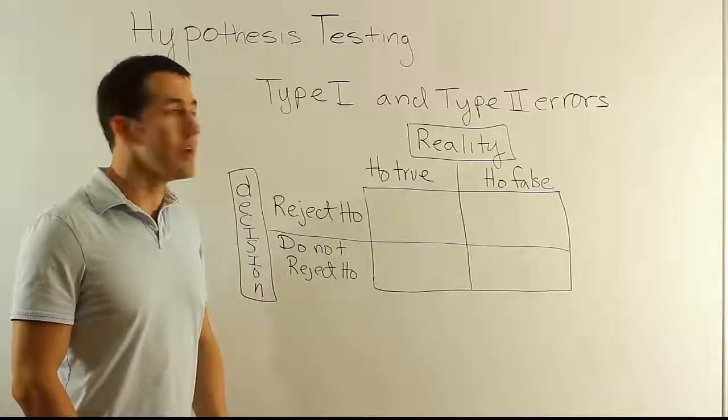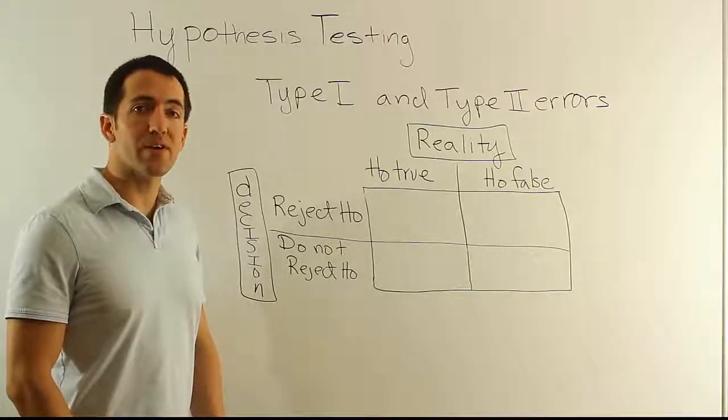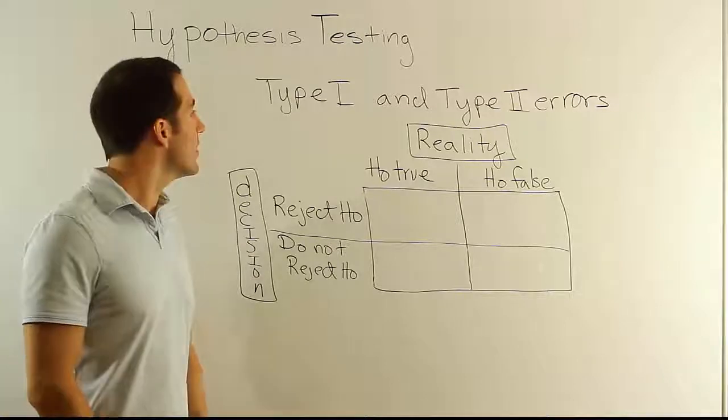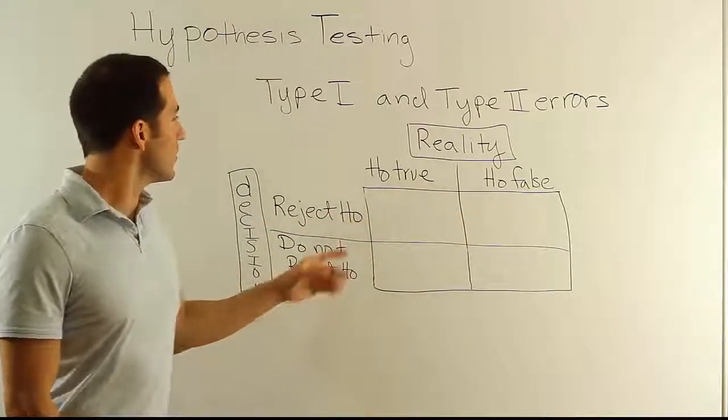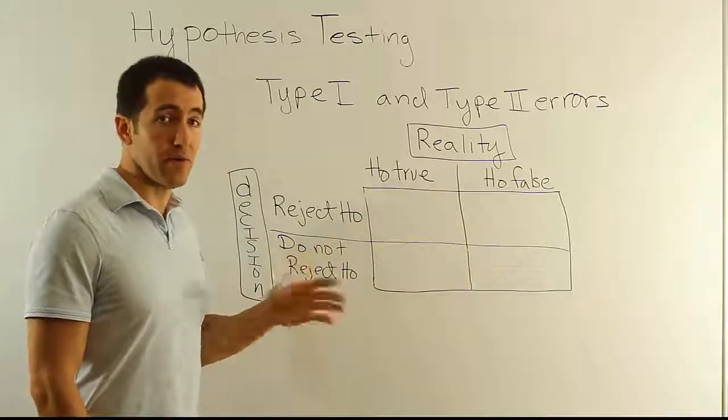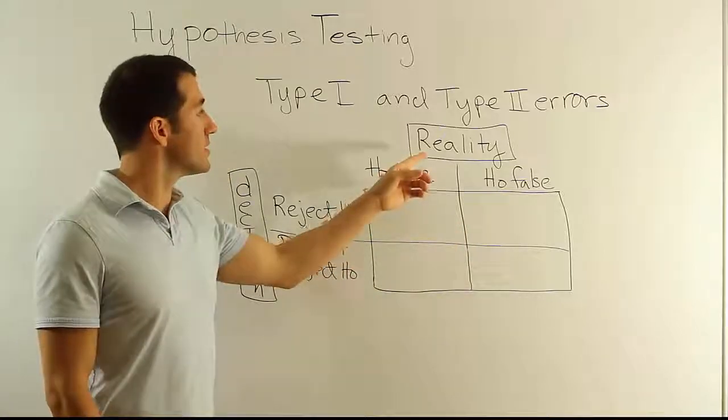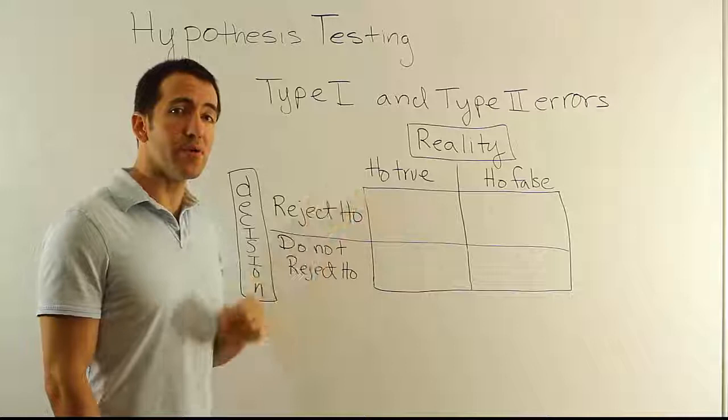Alright, this video is about the Type I and Type II errors that can occur when you're testing hypotheses. So the grid here is basically giving you four possible outcomes that can occur. The reason why there's four possible outcomes is because there's only two things that can be true in reality.